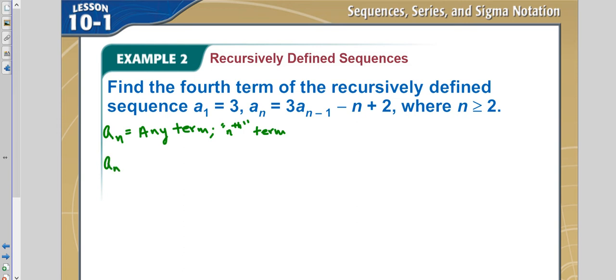But a sub n minus 1 just means the term previous. So this is the previous term. Because n represents some numbers. So if you want to find the fourth term, a sub n minus 1 would be 4 minus 1, which would be the third term. So this is saying if you want to find any term, you look at 3 times the previous term minus term number plus 2.